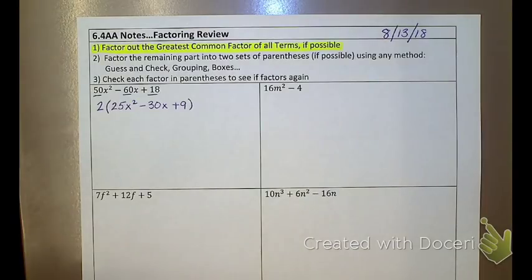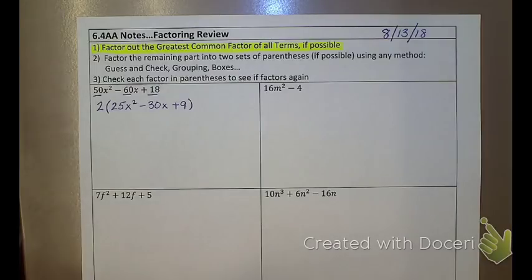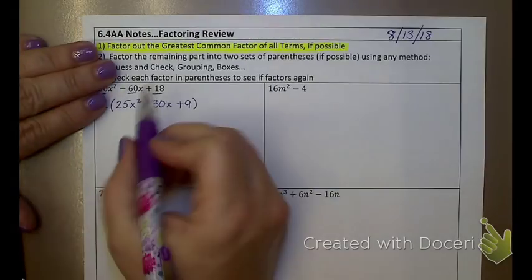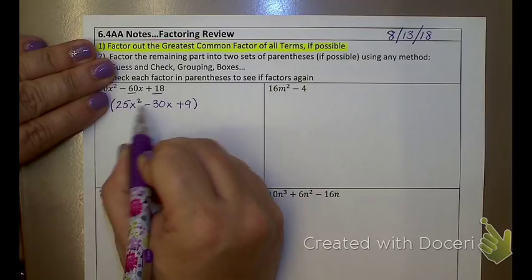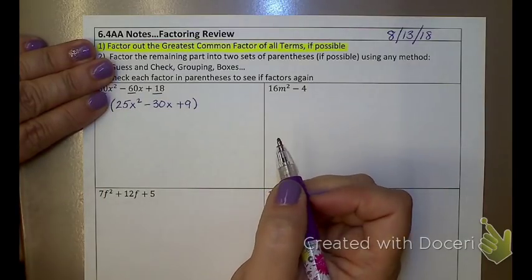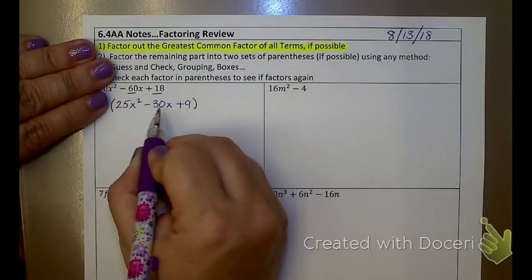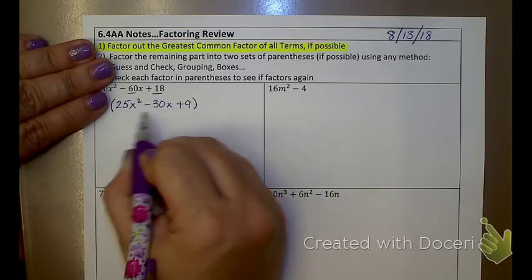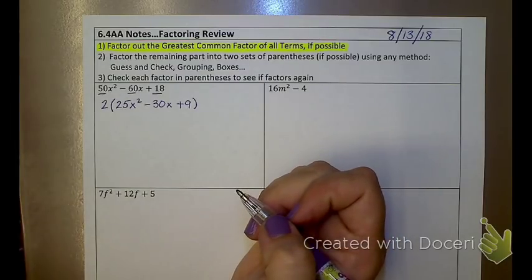Now, if I'm unsure as to whether 2 was the biggest number, or if I want to know maybe I could have taken out a 4, or a 6, or some number that's bigger, how I check that is I look here. Is there any number that all of these 3 could be divided nicely by? And the answer is no. These 2 are divisible by 5, but 9 is not. 30 and 9 are divisible by 3, but 25 is not. Since these ones no longer have anything in common, 2 was the biggest number that I could take out.